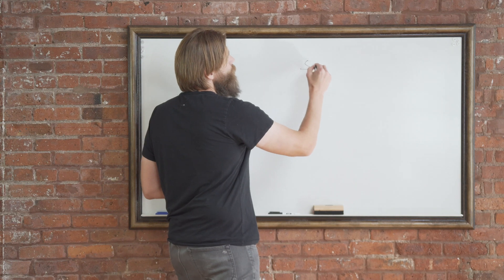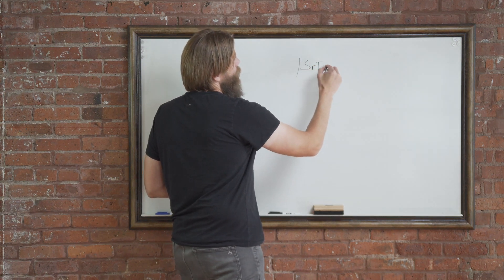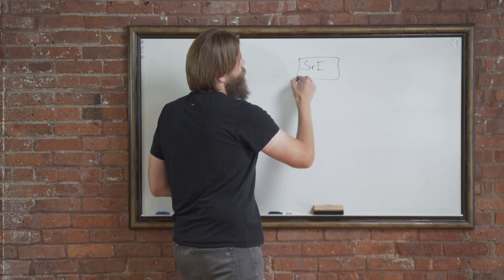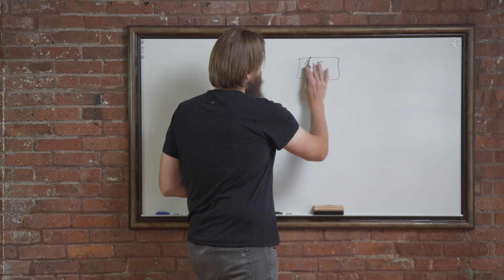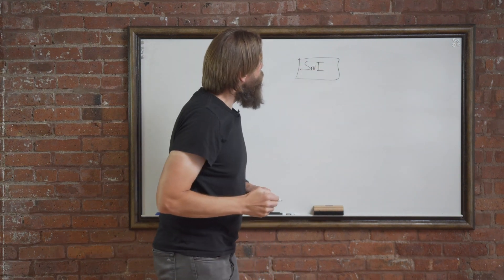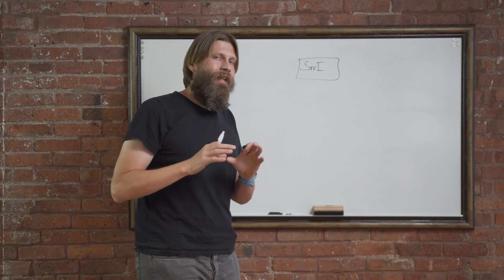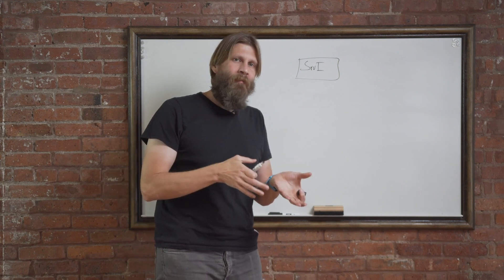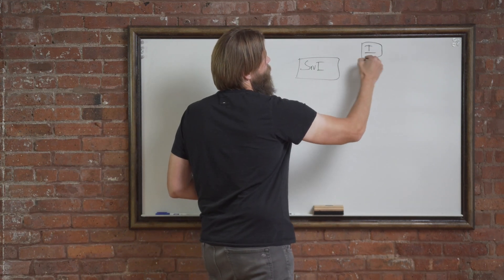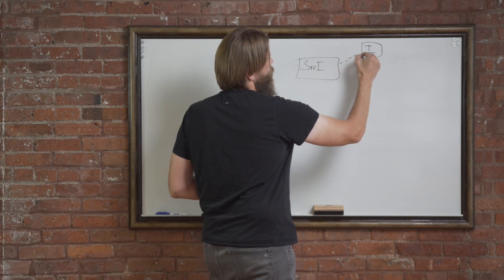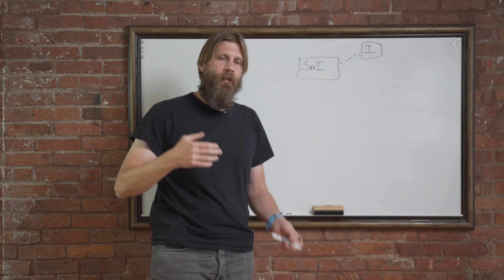So we have something called a service item — we'll call it SRV. A service item is an item, but it's not the normal item that we have in Business Central. A service item can be connected to a normal item; I'll put a dotted line here, but it doesn't have to be.